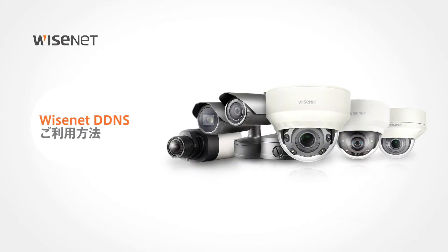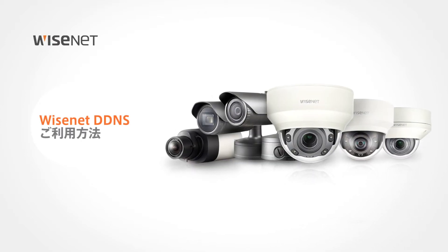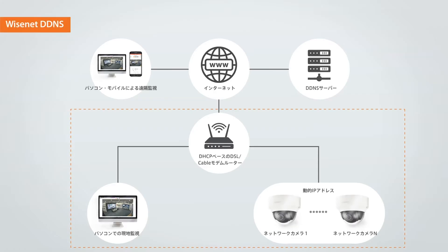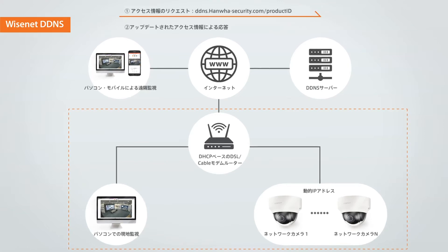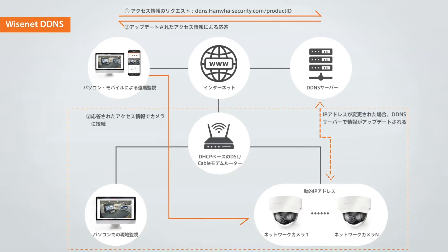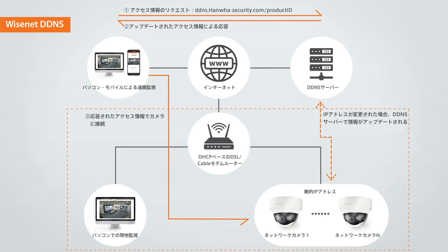Welcome! This video will show you how to use Wisenet DDNS. When a camera is using a dynamic IP address, it is often difficult to access the camera since users have to enter the updated IP address every time it changes. Wisenet DDNS is a service that converts the dynamic IP address of a camera into a DDNS URL so that users can easily access the camera when using an external remote PC or mobile.